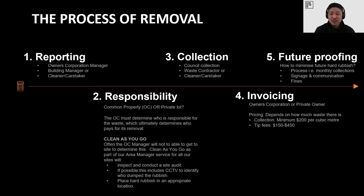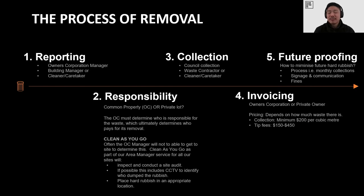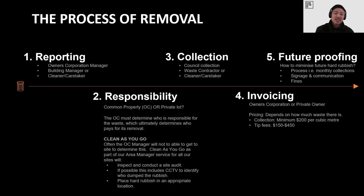If the OC doesn't want to deal with hard rubbish at all, another way is to create signage and communicate that with residents. The signage tells residents that hard rubbish is not to be dumped on the property, and that if caught — given CCTV — they will be tracked down and required to pay the cost of disposal. In one instance, the hard rubbish problem almost disappeared overnight. Everyone who dumped received a breach notice and a potential fine, and when they found out, they removed the rubbish themselves. This worked very well in an apartment with about 200 different apartments.